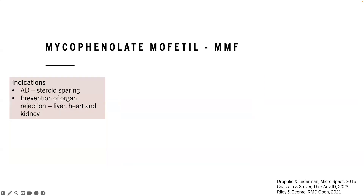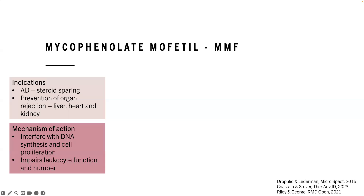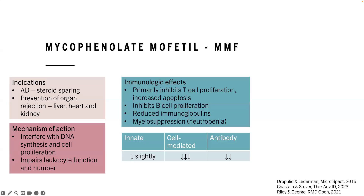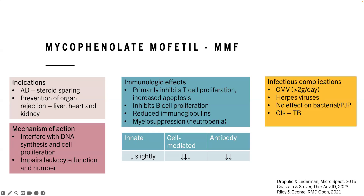MMF is frequently used as a steroid-sparing agent and for prevention of organ rejection. It inhibits T cell proliferation similarly to azathioprine — mostly focused on cell-mediated T cell response, but also affects B cells, reducing immunoglobulin levels. There is some myelosuppression, particularly neutropenia. Infectious complications include increased risk of CMV at higher doses (greater than 2 g/day), other herpes viruses, and some risk of TB. Interestingly, MMF almost has a protective effect against PCP — there is no real increased PCP risk — and no particular effect on bacterial infections.